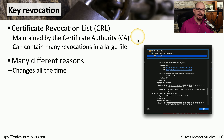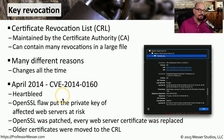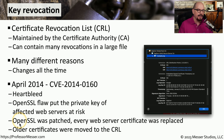This administrative process of creating and then revoking certificates is built in to any certificate authority. We found out in April of 2014 when we discovered the Heartbleed attack — a vulnerability in the OpenSSL application library — that could allow a web server to provide a third party with the web server's private key. We had to revoke all of our certificates and create brand new ones once the OpenSSL code was updated.